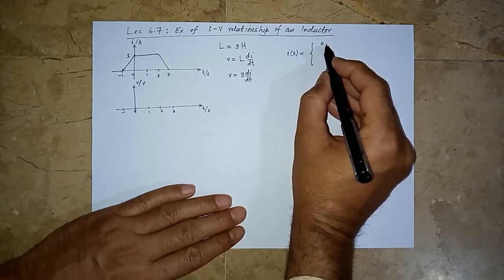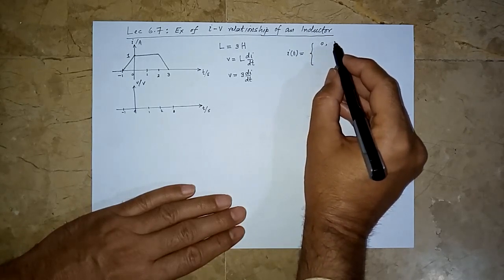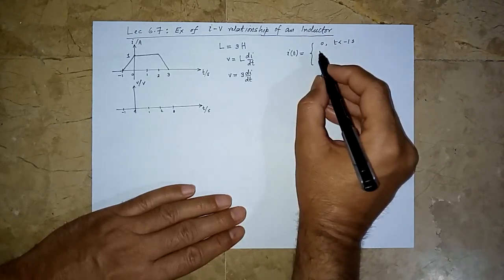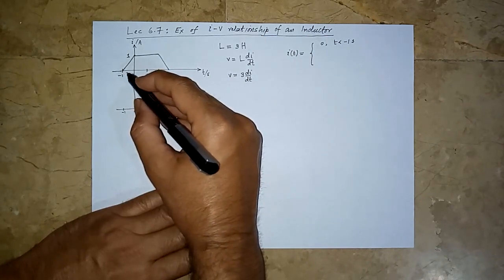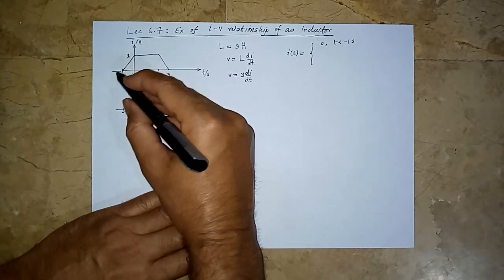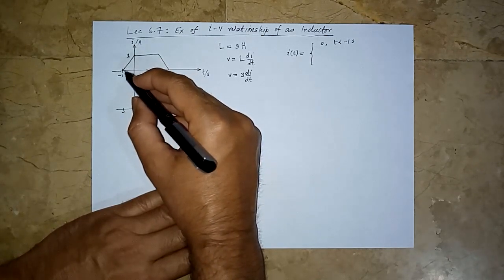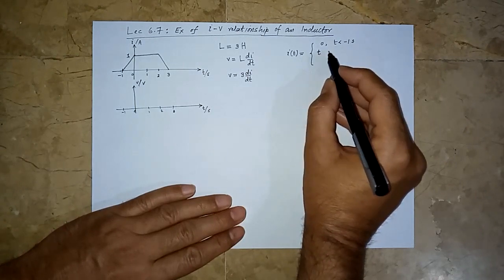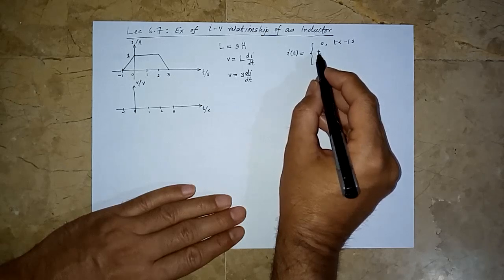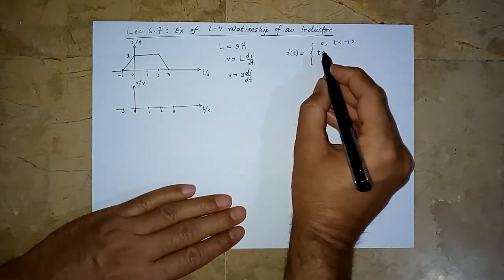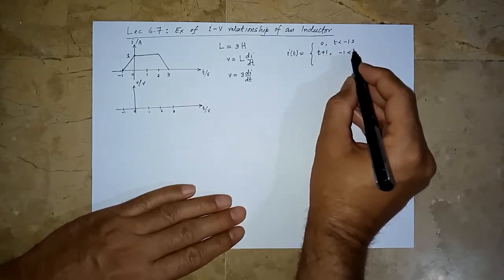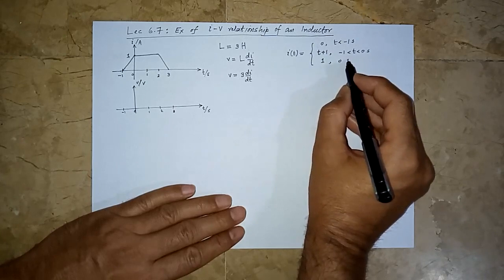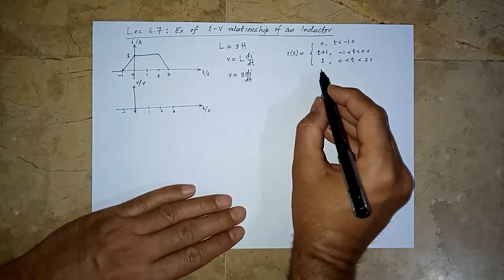For t less than minus 1 seconds, i is 0. Between minus 1 and 0, it is a straight line — in one second it changes from 0 to 1, so it has a slope of 1. The equation is mt + c, so we get t + 1 between minus 1 and 0. It is a constant 1 between 0 and 2 seconds.